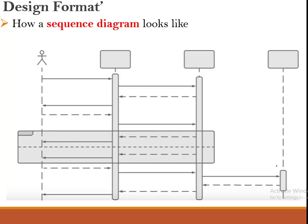A full sequence diagram normally looks as shown. We will discuss each component. There is an actor, and there are objects. We have dashed lines referred to as lifelines. We have solid lines as well as dashed arrows referred to as messages. We also have an alternative frame, a loop frame, and lastly what we refer to as an activation box — some are small and some are longer.